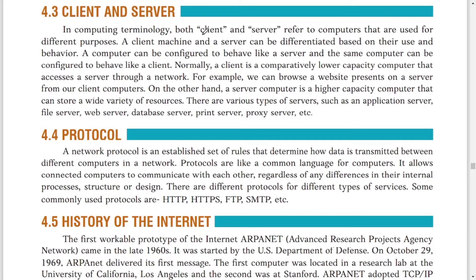In computing, client and server refer to computers used for different purposes. The central computer of the network is generally known as the server — it serves files to the clients. The computers connected to the server and requesting files or information from the server are known as clients. Clients are always connected to and requesting something from the server, and the server responds to and serves them.